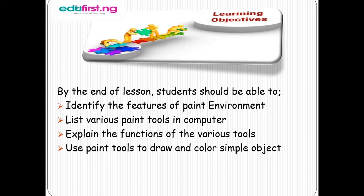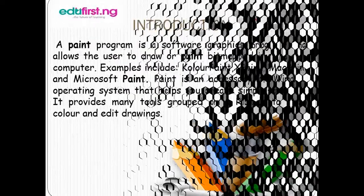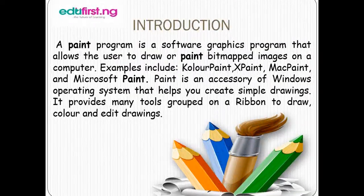Let's look at what is a paint program. A paint program is a software graphics program that allows users to draw or paint bitmap images on a computer. Examples of such paint programs are Color Paint, X Paint, Mac Paint, and Microsoft Paint. Microsoft Paint is mostly used in educational institutes.